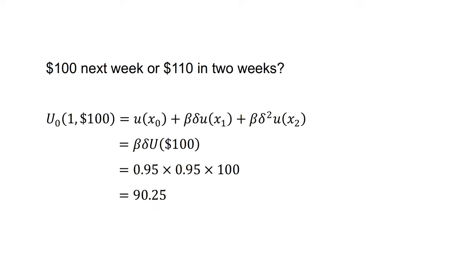What of choice two? Would this present biased agent prefer $100 next week at t equals 1 or $110 in two weeks at t equals 2? The discounted utility of $100 next week is u(0, 1, 100), which equals beta times delta times u(100), which equals 0.95 times 0.95 times 100, which equals 90.25.